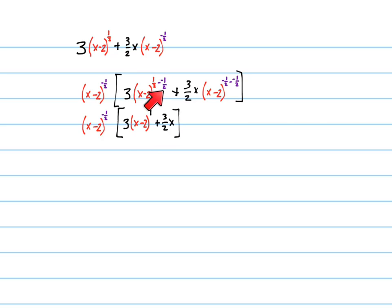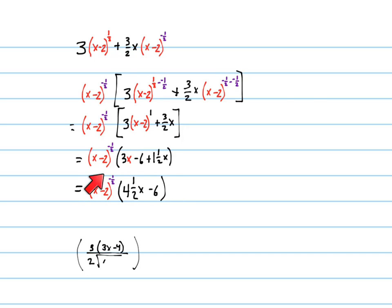So, here again, we got the 1 exponent for those guys, and the rest is cosmetics. Clean it up. First of all, we can distribute the 3, and we can add 3x plus 1 and a half x to get 4 and a half x. And that's pretty decent. You can leave your work like that and be satisfied. However, negative exponents, negative fraction exponents, they can be cleaned up a little bit. So, for example, this x minus 2 to the negative 1 half, that can be expressed as 1 over the square root of x minus 2. So, it looks a little cleaner.